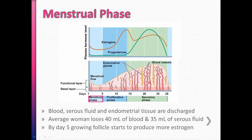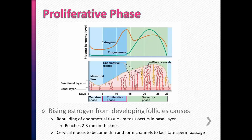As estrogen levels rise, we enter the proliferative phase and start building up the endometrial lining. The endometrial tissue increases in size due to mitosis — the basal layer replaces the lost functional layer, increasing its thickness to about two to three millimeters. During this time, the cervical mucus that covers the cervix becomes thin and forms channels, in anticipation that sperm may swim through to reach an egg and cause pregnancy.